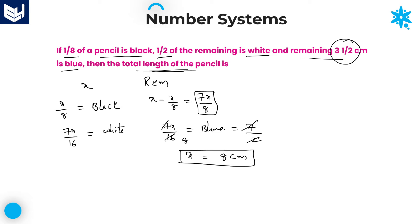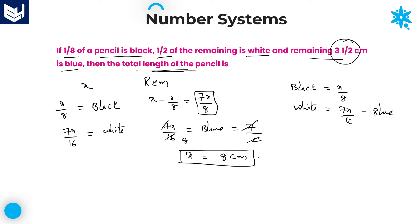If you want the individual lengths of white, black, and blue, then also you will get the answer. Black is equal to x/8, white is equal to 7x/16, and similarly blue is equal to 7x/16. These are the individual values of black, white, and blue. And the total length of that particular pencil is 8 centimeters. That is the required answer.